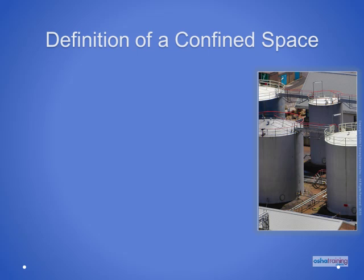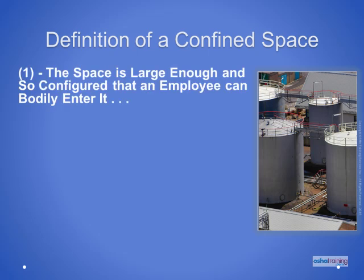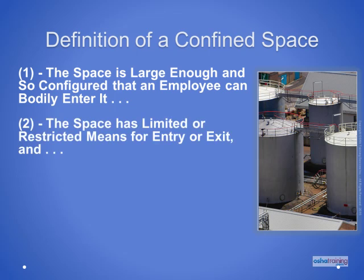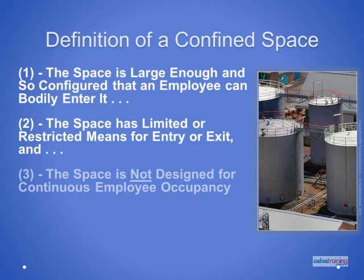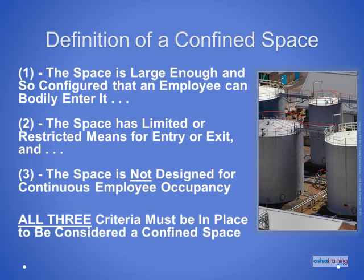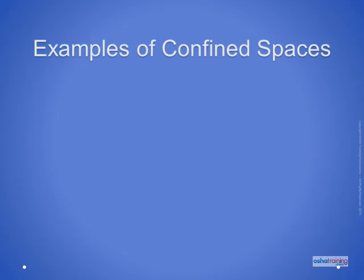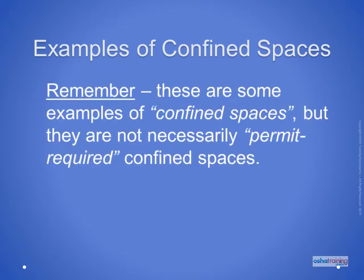Here is a recap of the three criteria in OSHA's definition of a confined space: Number one, the space is large enough and configured that an employee can bodily enter and perform assigned work. Number two, the space has limited or restricted means of entry or exit. Number three, the space has not been designed for continuous employee occupancy. All three criteria must be present for a space to be considered a confined space. We will now look at some examples of confined spaces; however, keep in mind that while these are examples of confined spaces, they may or may not be permit-required confined spaces — that will be determined at a later time.